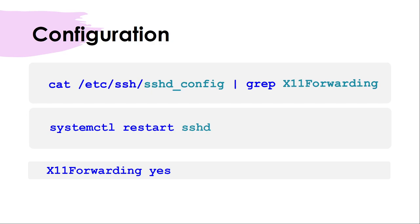There is a config file, sshd_config, under /etc/ssh. In that file make sure X11 forwarding is set to yes. If it was set to no, change it to yes and then restart the sshd service for the change to take effect. If you change it but don't restart the service, the parameter won't be effective.